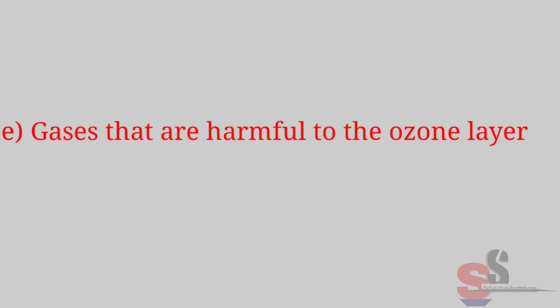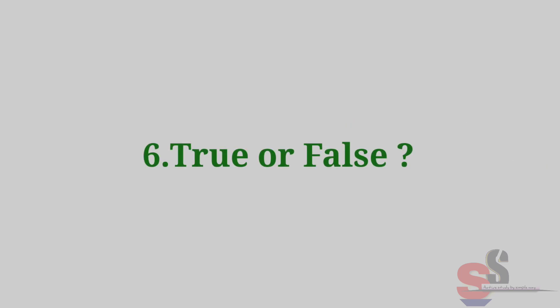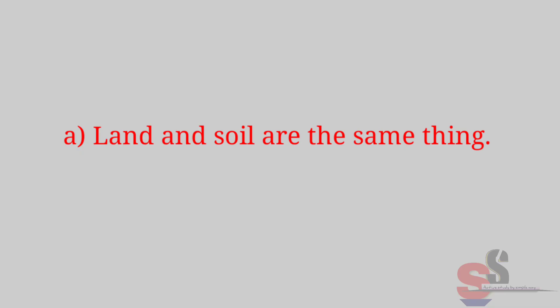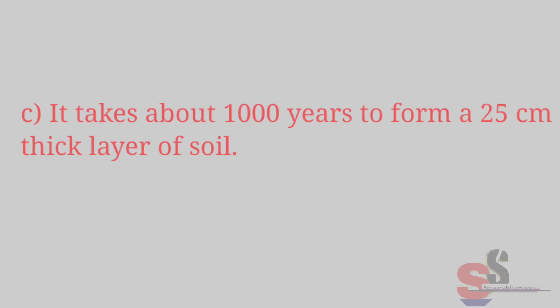E. Gases that are harmful to the ozone layer — Answer: Chlorofluorocarbons, Carbon tetrachloride. Question 6: True or False. A. Land and soil are the same thing — False. B. The water in the lakes is called groundwater — False. C. It takes about 1000 years to form a 25 cm thick layer of soil — False.